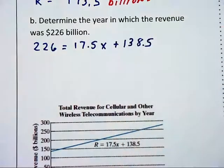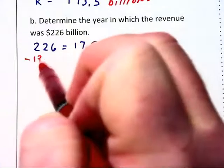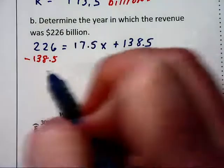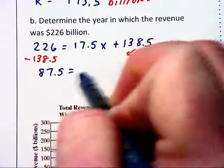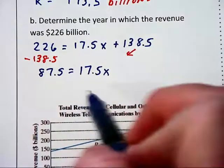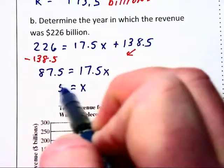The first thing we want to do is subtract off 138.5 from each side of the equation. This is going to give us 87.5 on the left equals 17.5x on the right, and dividing through by 17.5 gives us x is equal to 5.